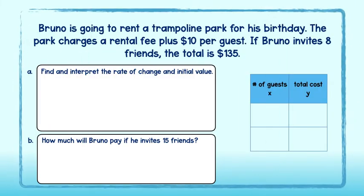Okay, it's your turn. Bruno is going to rent a trampoline park for his birthday. The park charges a rental fee plus $10 per guest. If Bruno invites 8 friends, the total is $135. We are first asked to find and interpret the rate of change and initial value. The problem tells us that there is a $10 fee per guest. The total cost Bruno will incur is based on the number of guests he invites, and so the rate of change is 10.